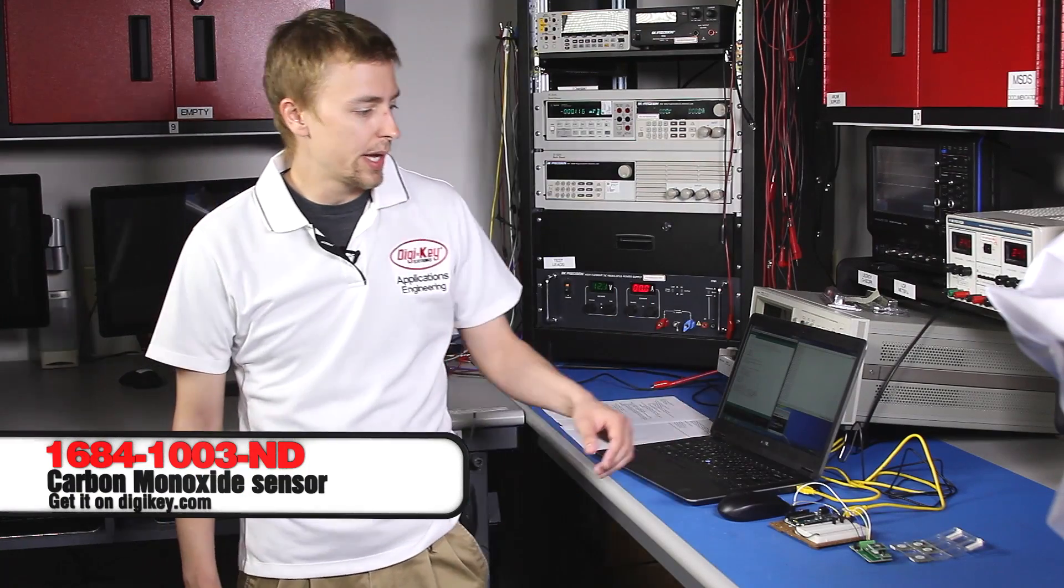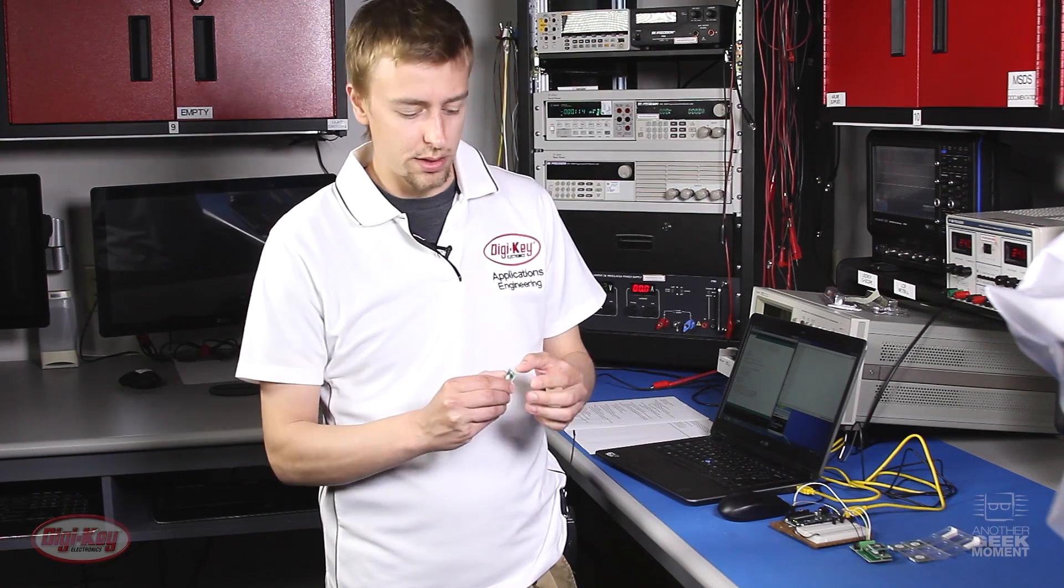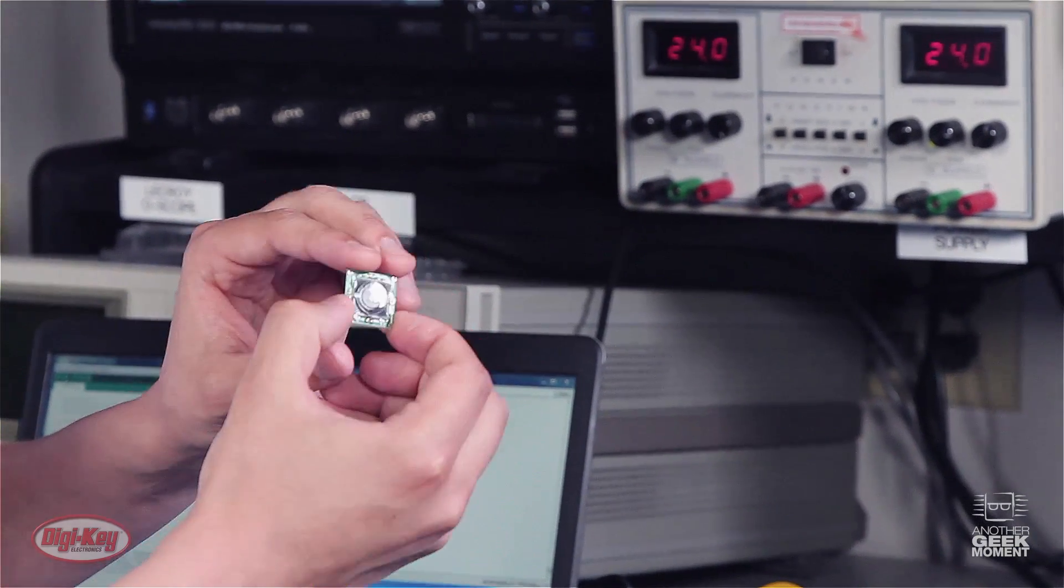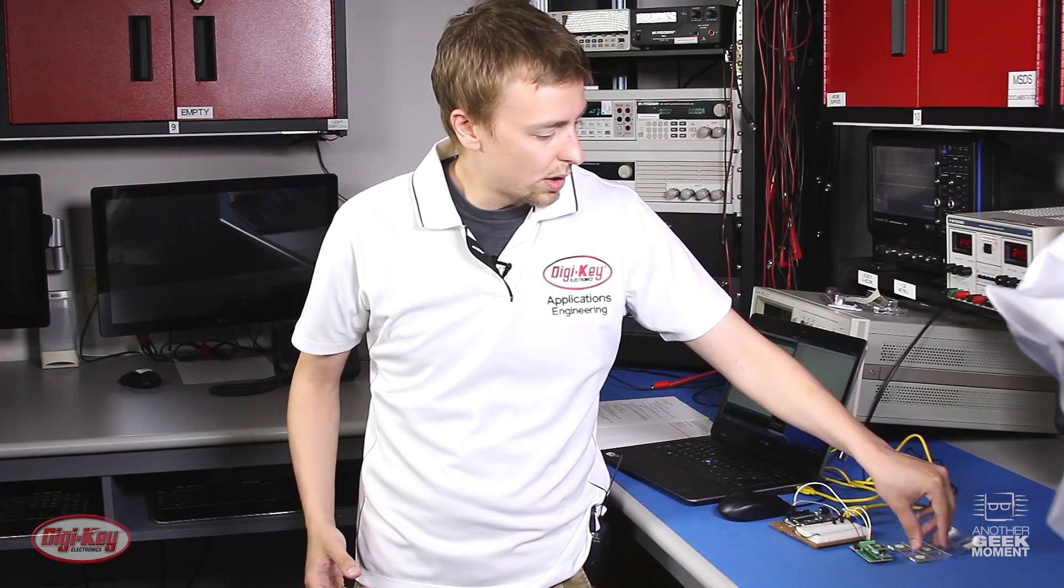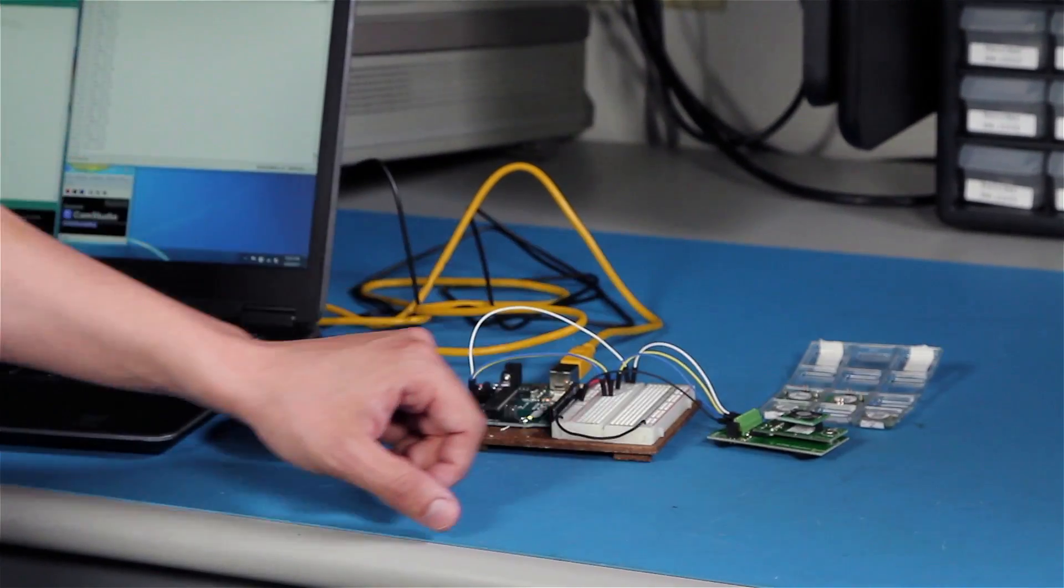This is an electrochemical device. They give you a little board and a sensor. This sensor can tell how much carbon monoxide gas is in the air in parts per million. It creates a current based on the amount of gas which goes through a potentiostat on this board, turning that into a reference voltage.